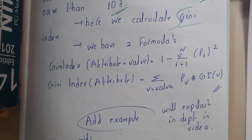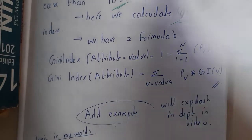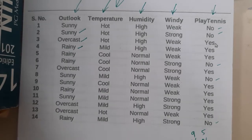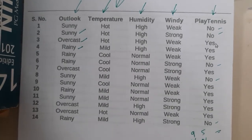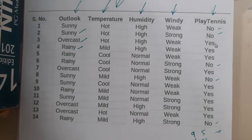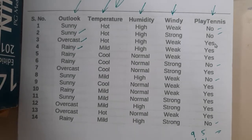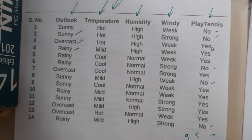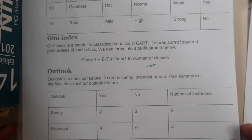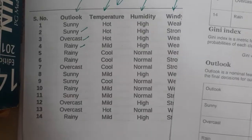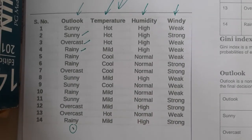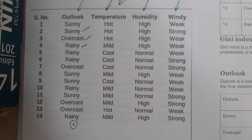Now let us go through the example. This is the exact same table we used previously. Let us check how long this takes — last time with ID3 it was 12 minutes. We will write the same table again, and the next step is counting the number of Yes's and No's with respect to each attribute. The first attribute is Outlook.